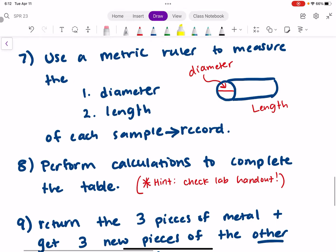In step seven, you're going to use a metric ruler to measure both the diameter, which is this here, and the length of your sample of each sample. And then you're going to record those values.